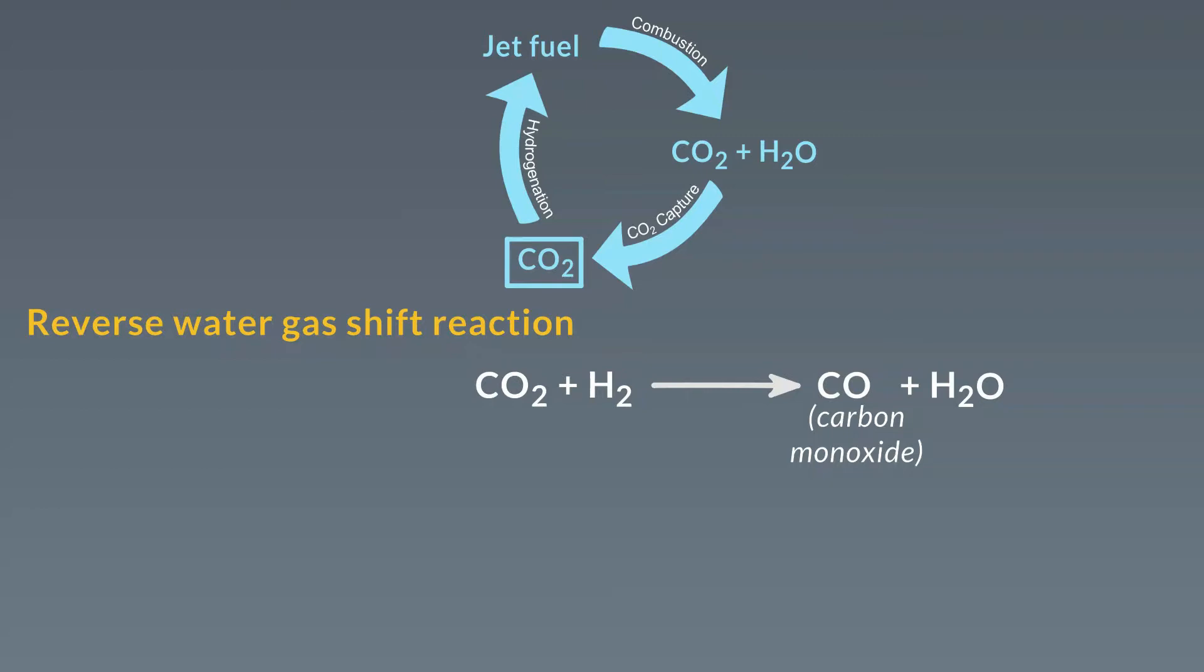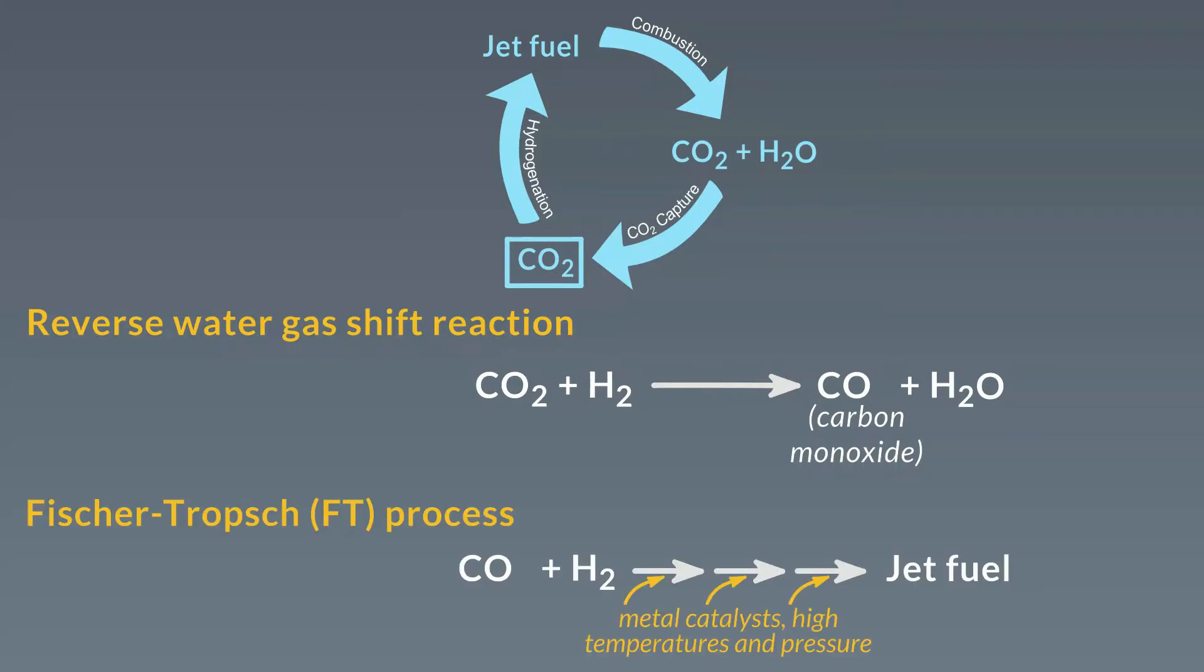The carbon monoxide then serves as feedstock to make hydrocarbon fuels using the well-established Fischer-Tropsch process. The FT process has been done on industrial scale and requires several steps, expensive metal catalysts, and elevated temperatures and pressures. The water gas shift reaction requires very high temperatures also, over 700 degrees Celsius, and a lot of research is going into finding catalysts that can allow this reaction to proceed at lower temperature.